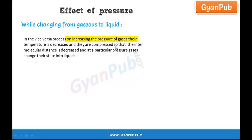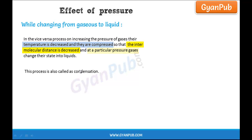On increasing the pressure of gases, their temperature is decreased and they are compressed so that the intermolecular distance is decreased. At a particular pressure, gases change their state into liquids. This process of converting gas into liquid by increasing its pressure is called condensation. Condensation is nothing but the changing of gas into liquid state by increasing its pressure.